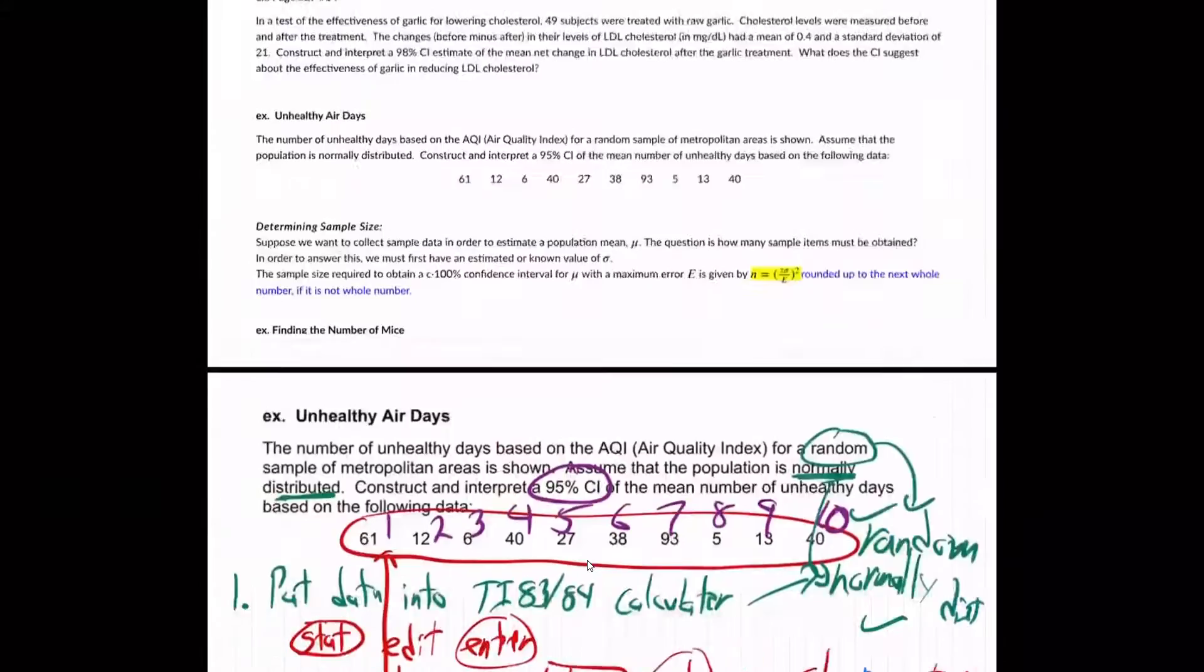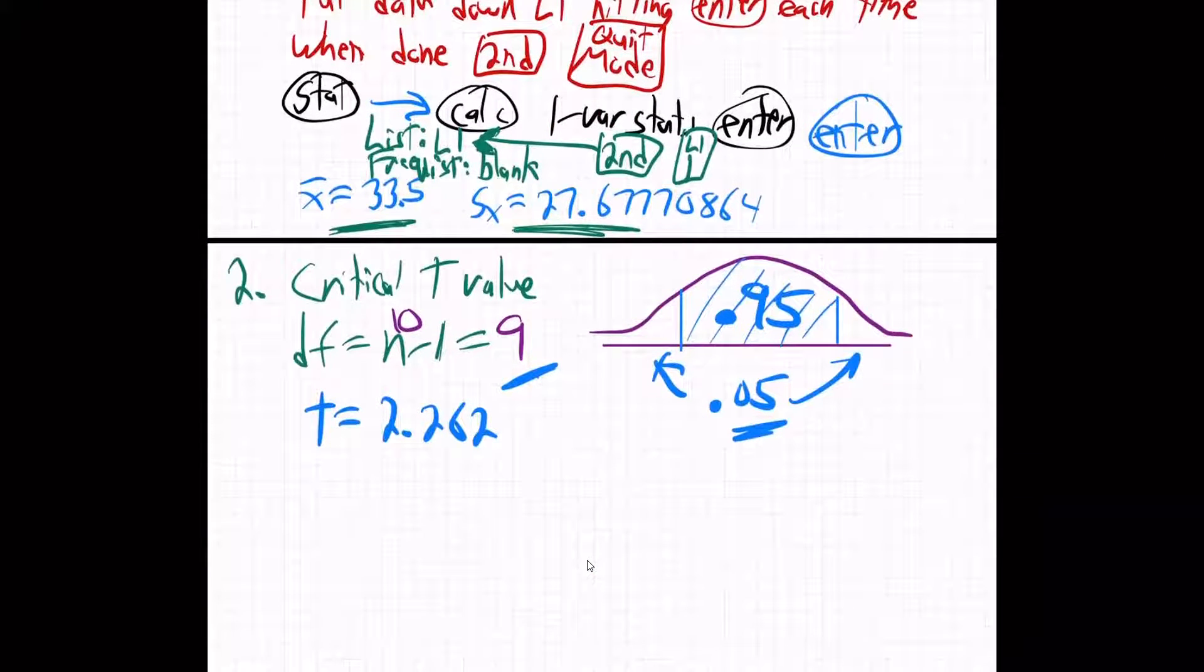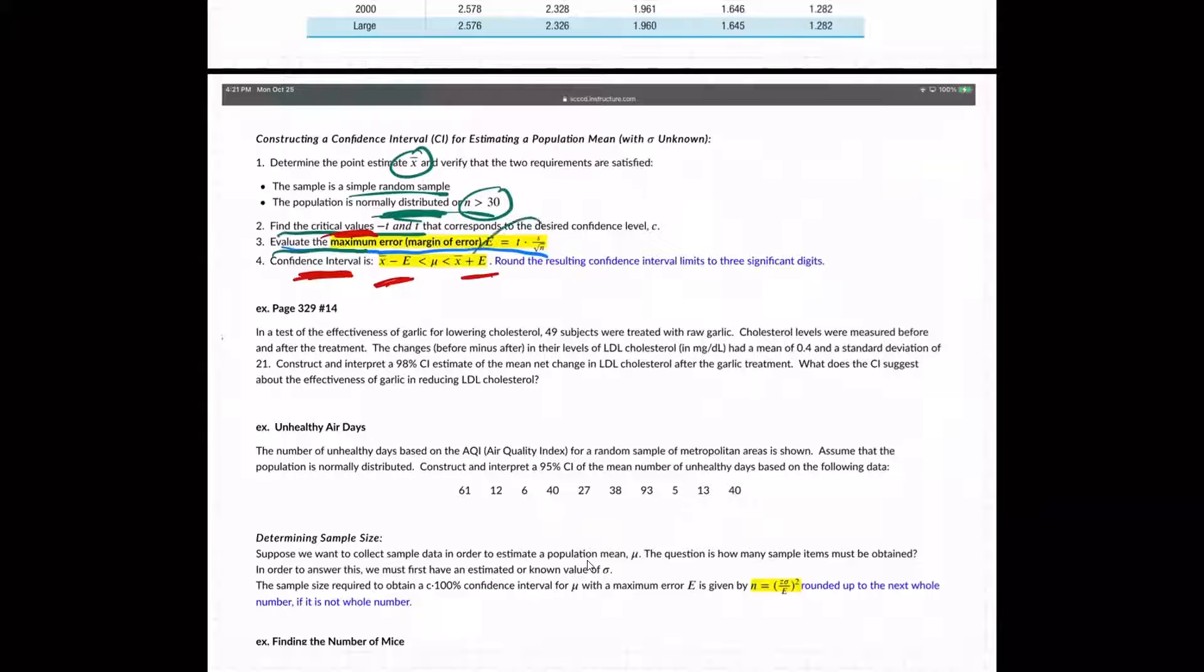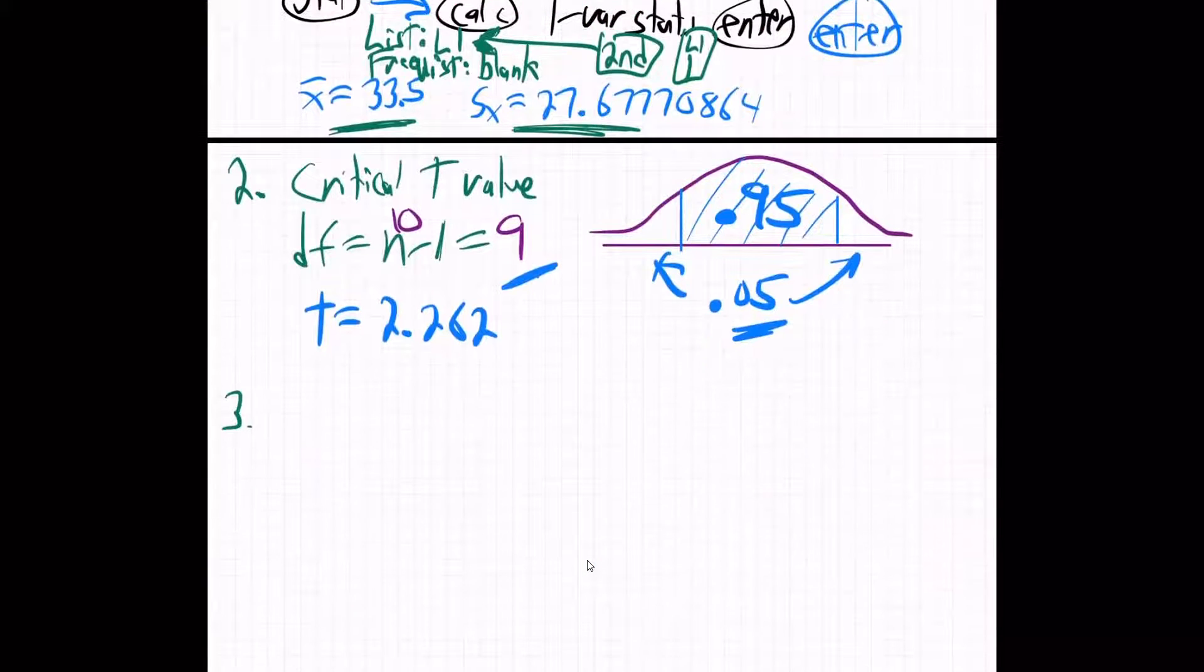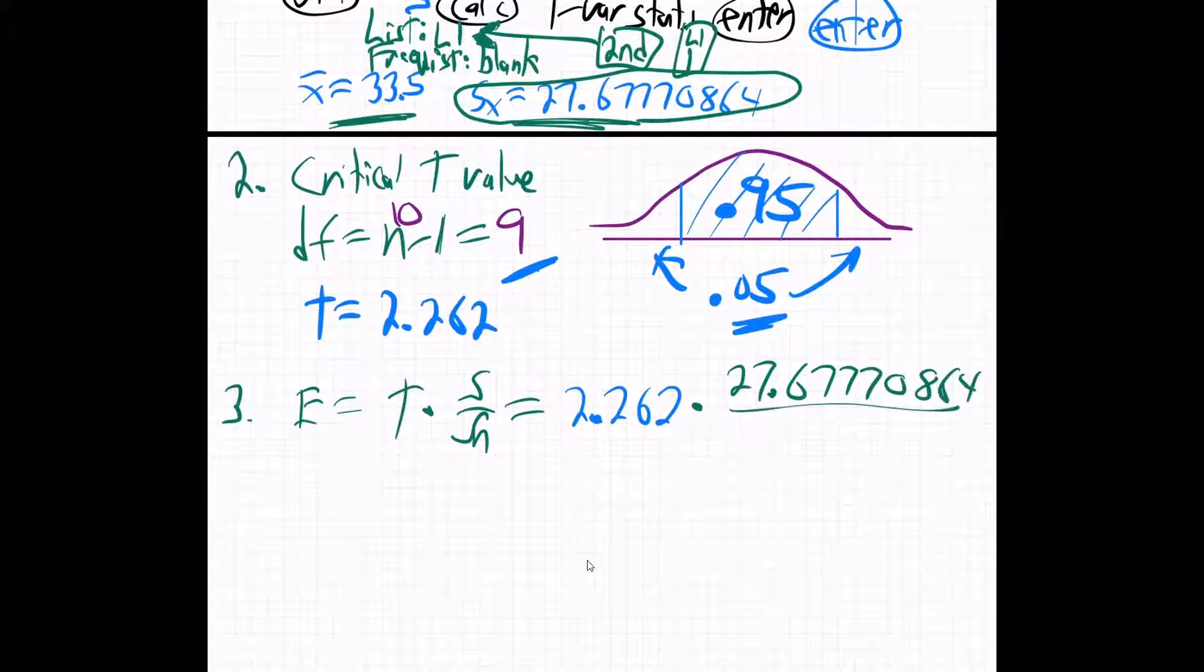So T equals 2.262, right? On we go with step number three now. Step number three in the notes tells us to evaluate E equals T times S over the square root of N. So E equals T times S over the square root of N. So T, there's my 2.262 times S. What's my S? Well, that's right up here. This is my S, S of X. So that's going to be 27. Now, you don't need all those digits really. I guess you could type them in. Over square root of N. That's the square root of. And what's N? N is still 10, right? Right here. N is 10. The number of data values.